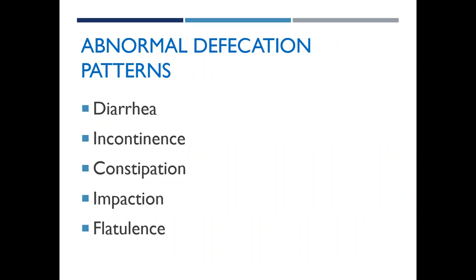Abnormal defecation patterns include diarrhea, which is an intestinal disorder characterized by abnormal frequency and fluidity of bowel movements. Hyperactive bowel sounds, urgency, abdominal pain, and cramping are all characteristics. Diarrhea is associated with disorders that affect digestion, absorption, and secretion in the GI tract. The most common hospital-acquired diarrhea is C. diff — Clostridioides difficile — a bacterium that causes diarrhea and can lead to life-threatening inflammation of the colon. C. diff commonly affects older adults in hospitals and long-term care facilities and typically occurs after the use of antibiotic medications.